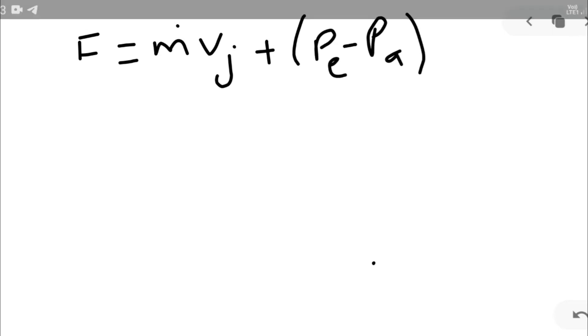Our equation of thrust is m dot mass flow rate, we will get nozzle jet velocity plus Pe minus Pa into Ae. This is our thrust equation of rocket.